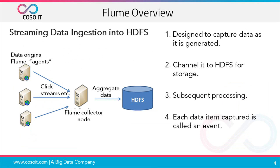Flume is basically designed to ingest streaming data into HDFS — capturing data as it is generated in real-time, then channeling it to HDFS for storage and subsequent processing. In Flume, each data item captured is considered an event. So Flume collects the data or events and aggregates them to put them in HDFS.